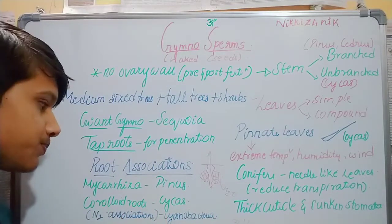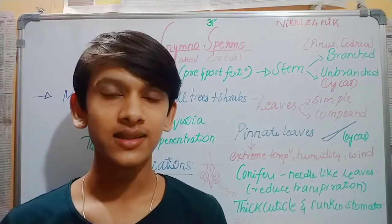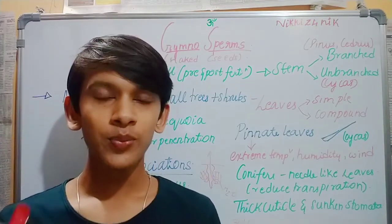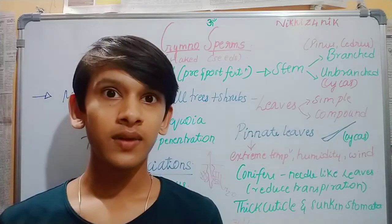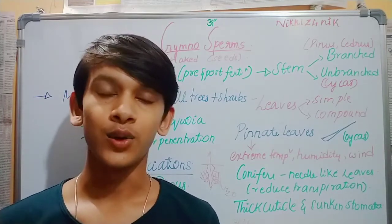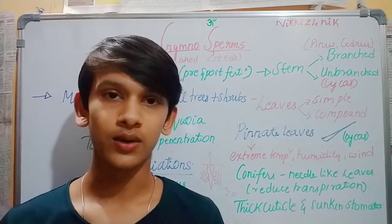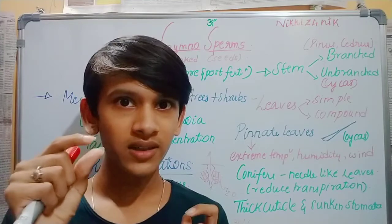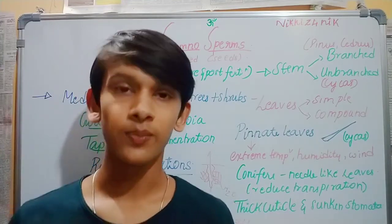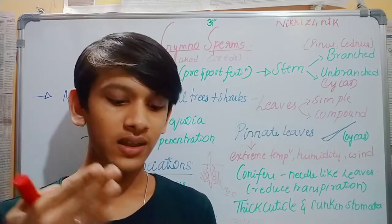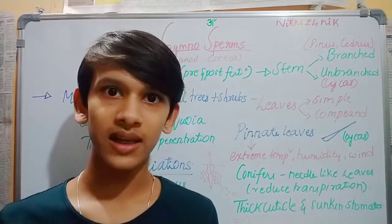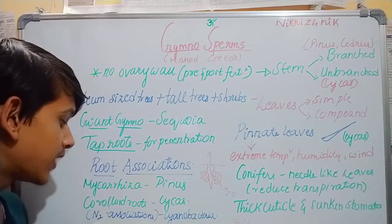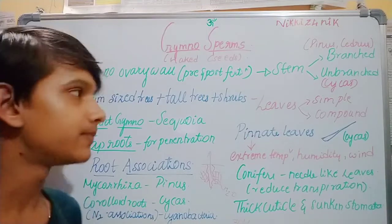Next are coraloid roots. In gymnosperms, specifically in cycas, there are coraloid roots — these are spherical or ball-shaped structures. Inside these coraloid roots, there are cyanobacteria. Cyanobacteria live in colonies with a mucilaginous sheath, and they have a specific cell called a heterocyst. The heterocyst helps in nitrogen fixation, so coraloid roots contain nitrogen-fixing cyanobacteria that supply nitrogen to the plant.